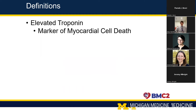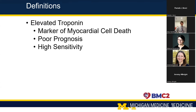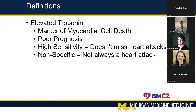An elevated troponin tells you a few things. First, it's a marker of myocardial cell death, and it gives a poor prognosis — the higher your troponin, the worse off your prognosis is moving forward. The troponin has a high sensitivity, meaning it doesn't miss heart attacks. When there is a heart attack, this blood test is really good at picking out every single one. The problem is that it's nonspecific. It does collect all the heart attacks, but it also captures people who are not having heart attacks but have elevated troponins. Context is really crucial in identifying why the troponin is elevated and whether it's because of a new heart attack or something else.